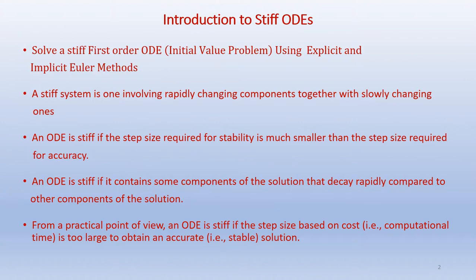A stiff system is one that involves rapidly changing components together with slowly changing ones. An ODE is stiff if the step size required for stability is much smaller than the step size required for accuracy. So if you are using an explicit method, we have to make sure the step size is very small so the stability criteria is met. An ODE is also stiff if it contains some components of the solution that decay rapidly compared to other components.